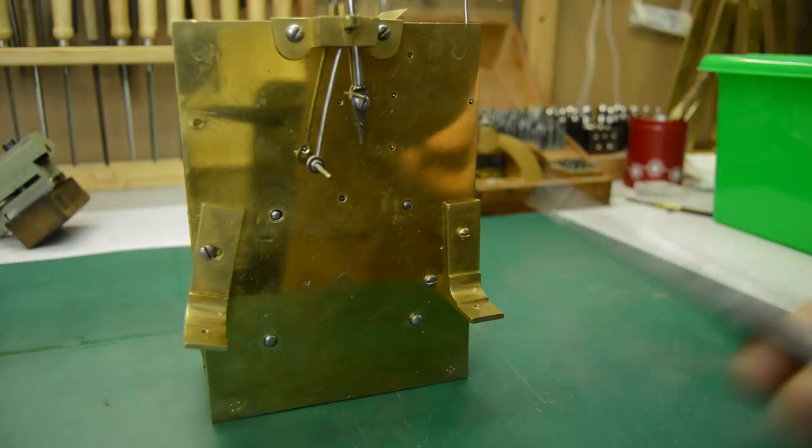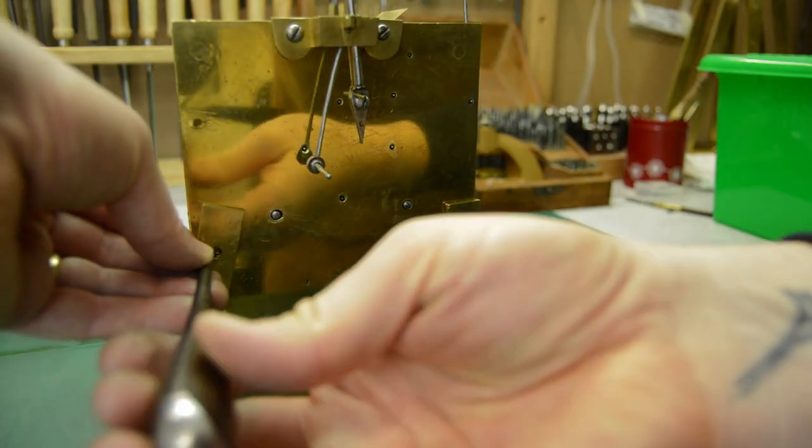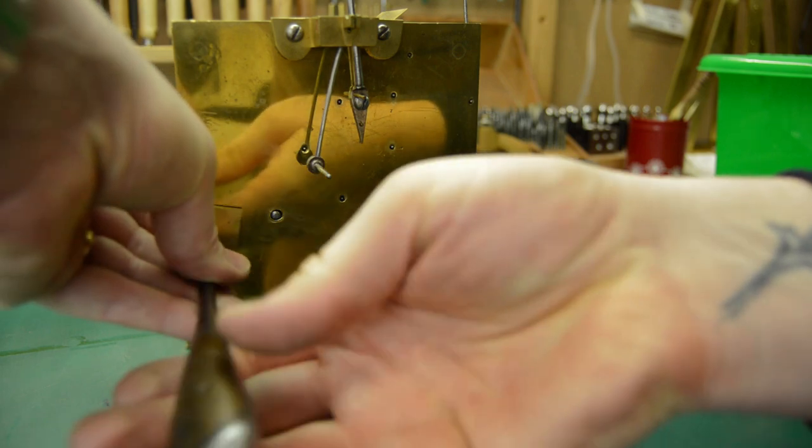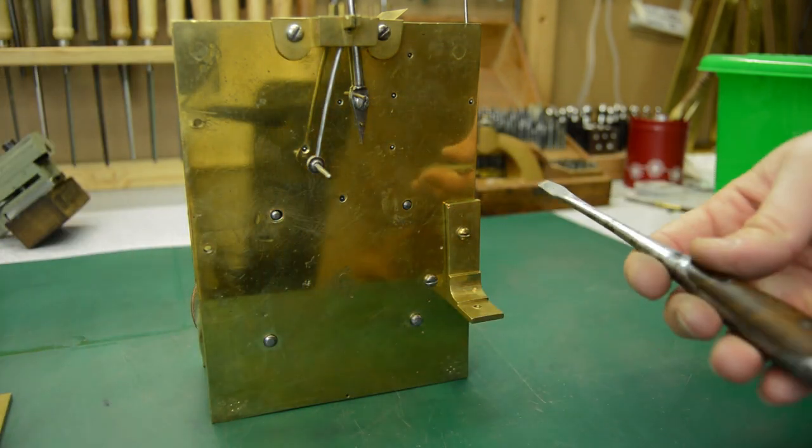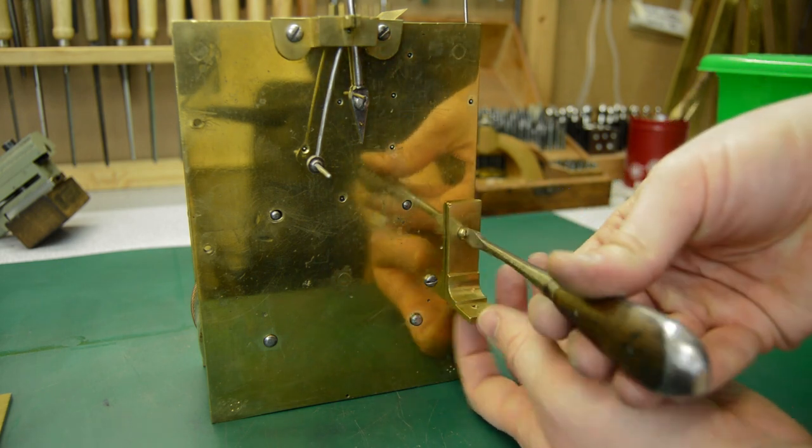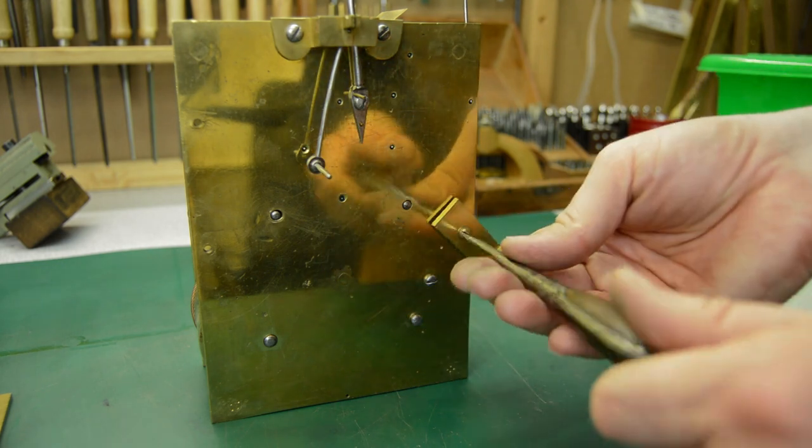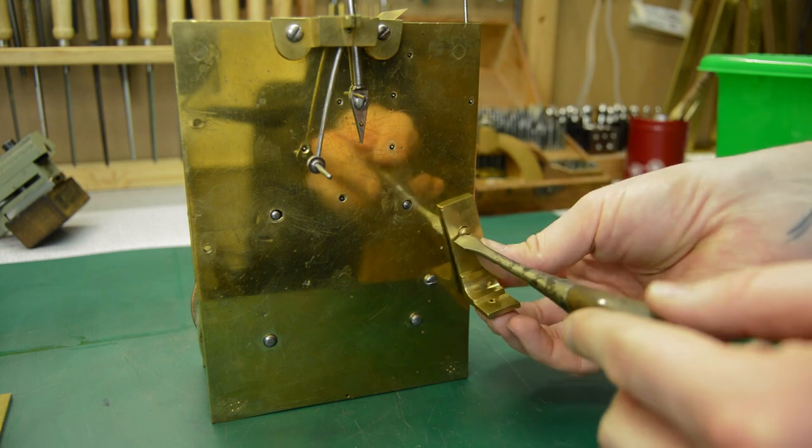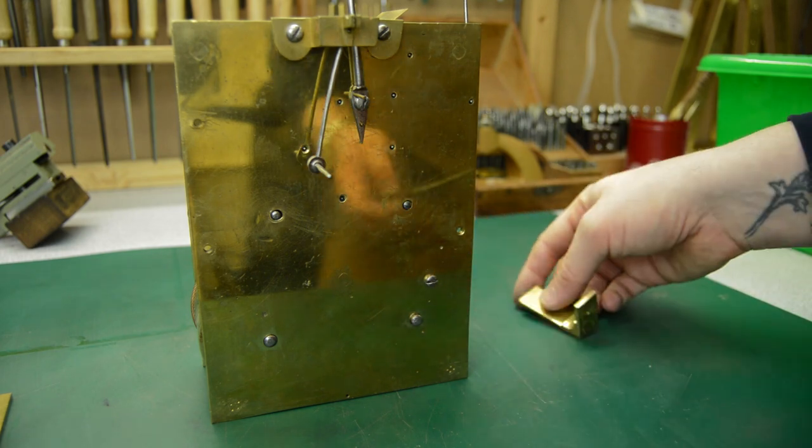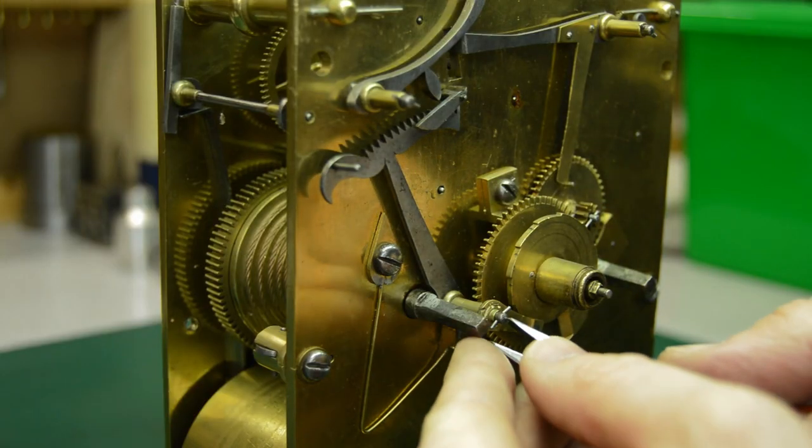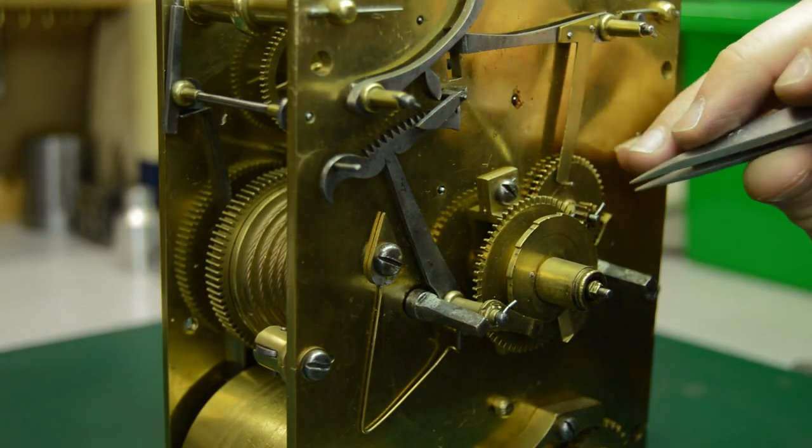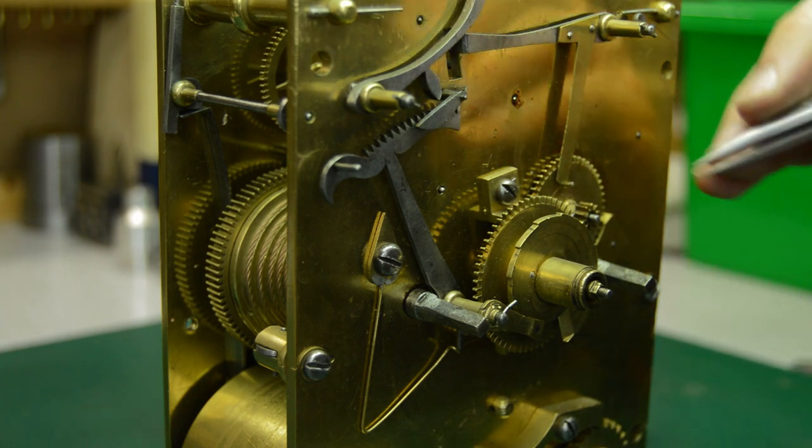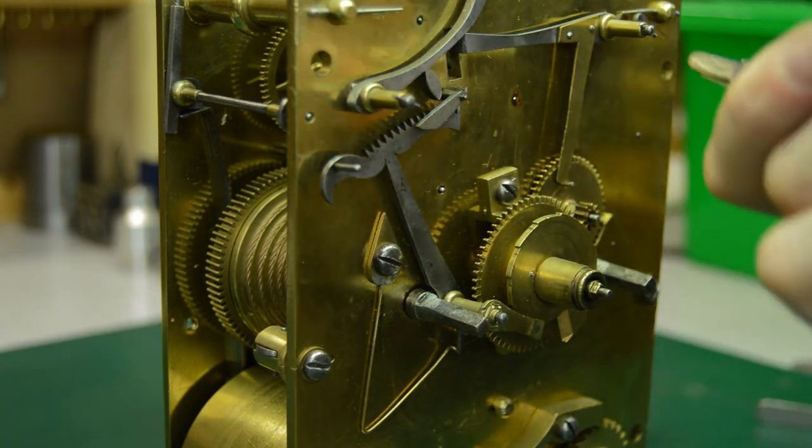Welcome back to part two of the Bracket Clock Restoration. In this episode, I'm stripping down the movement so that I can assess how bad the condition really is. The clock hasn't been worked on for a long period of time, far too long in fact, so as you will see as I take the movement apart, there's a lot of built up dirt and debris and old oil causing a lot of problems. This has been causing wear as well, as you'll see later as we take the movement apart.